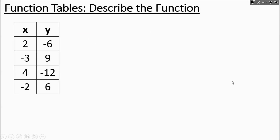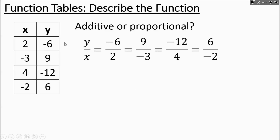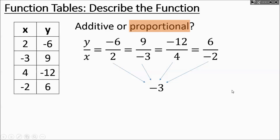Next table: is it additive or proportional? Negative 6 minus 2 is negative 8, and 9 minus negative 3 is 12 — those aren't the same, so it's not additive. It's probably proportional. Let's check: negative 6 over 2 and 9 over negative 3 — taking all y values over their corresponding x values — they all work out to negative 3. So we're multiplying all inputs by negative 3. It's proportional. The rule is y equals negative 3 times x.